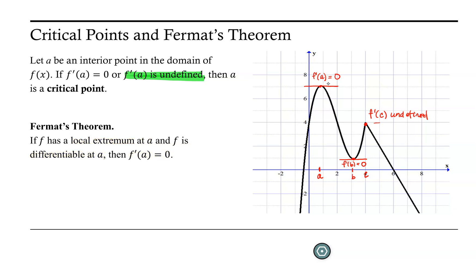We can say similar things about what's happening at b. At b, f has a local minimum. Again, the curve is nice and smooth and differentiable, and there is a local minimum. So at b, yes, there is a local minimum and the function is differentiable; therefore we know that the derivative is equal to zero.